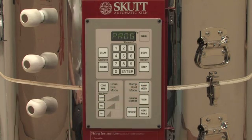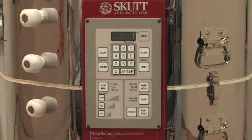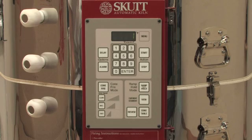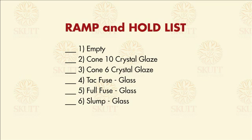The first piece of data the controller will ask you for is where you want to store the program. You have a choice between 1 and 6. It is a good idea to keep a list nearby of where all your programs are stored. This will help prevent you from overriding an existing program.